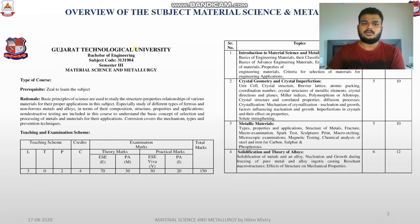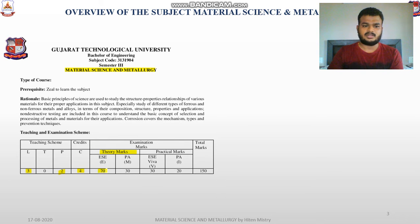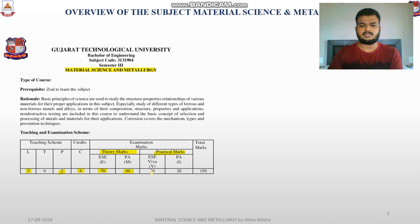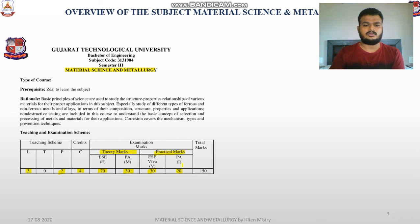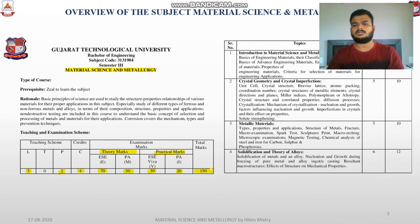We are under Gujarat Technical University and the subject name is Material Science and Metrology. The basic scheme includes three lectures per week, two practical sessions, and a total of four credits. Theory marks include 70 marks for external and 30 marks for practical examination. For practical marks there are 30 marks for assignments and 20 marks for weekly assessment, making a total of 150 marks.